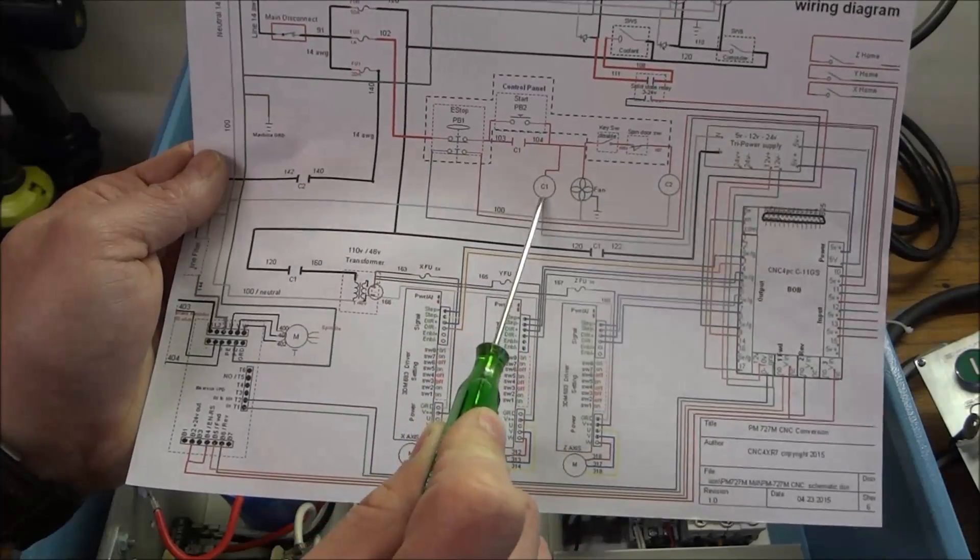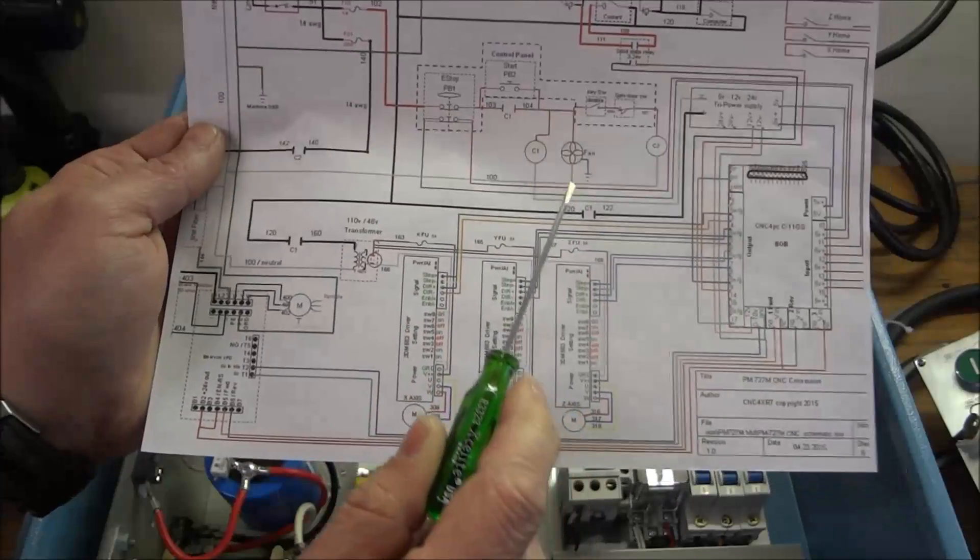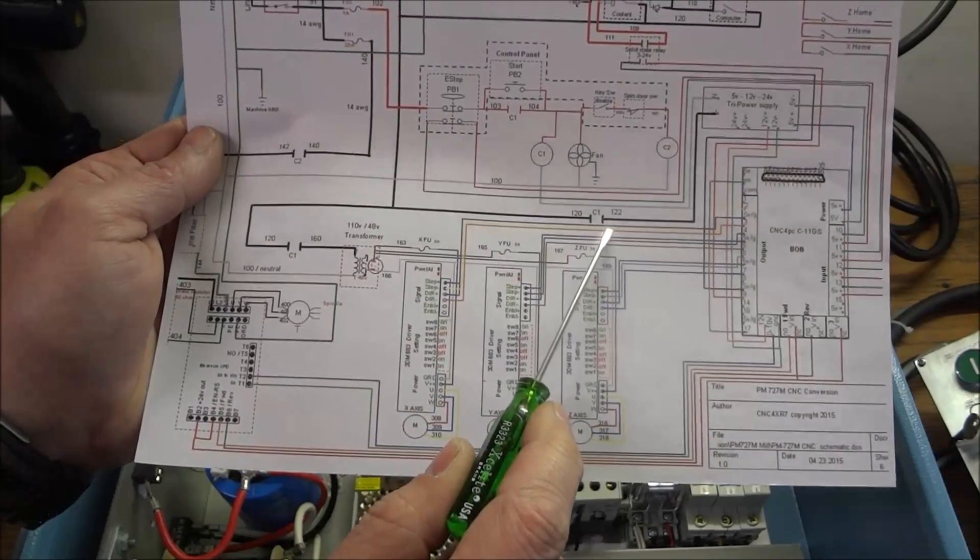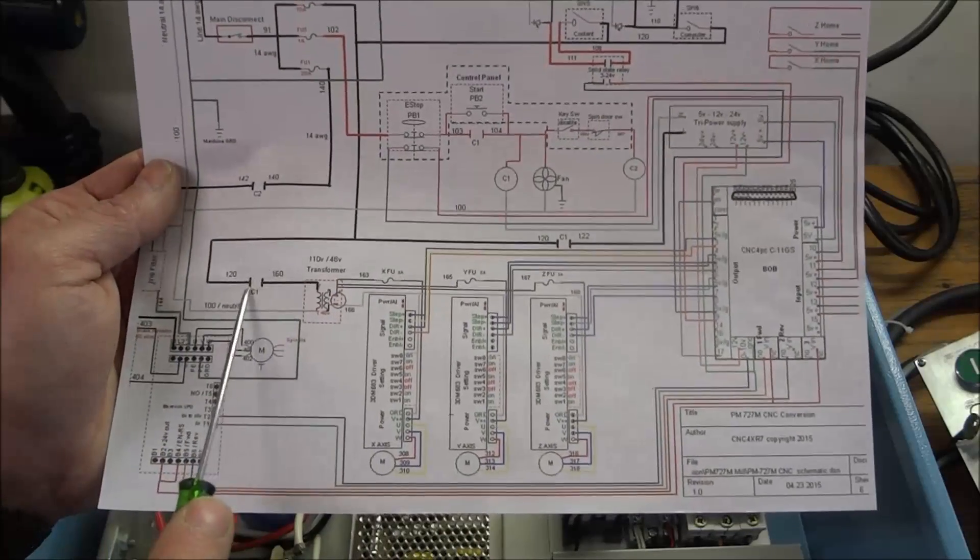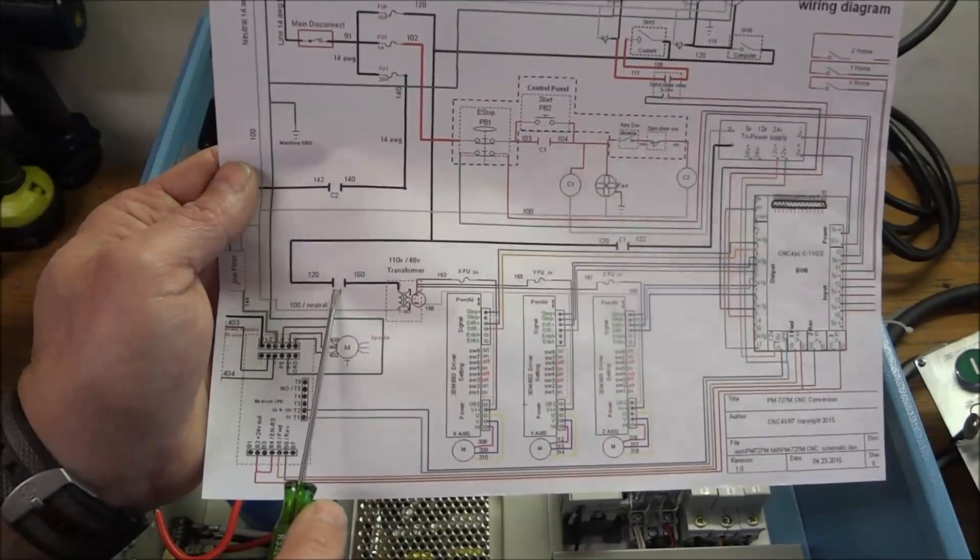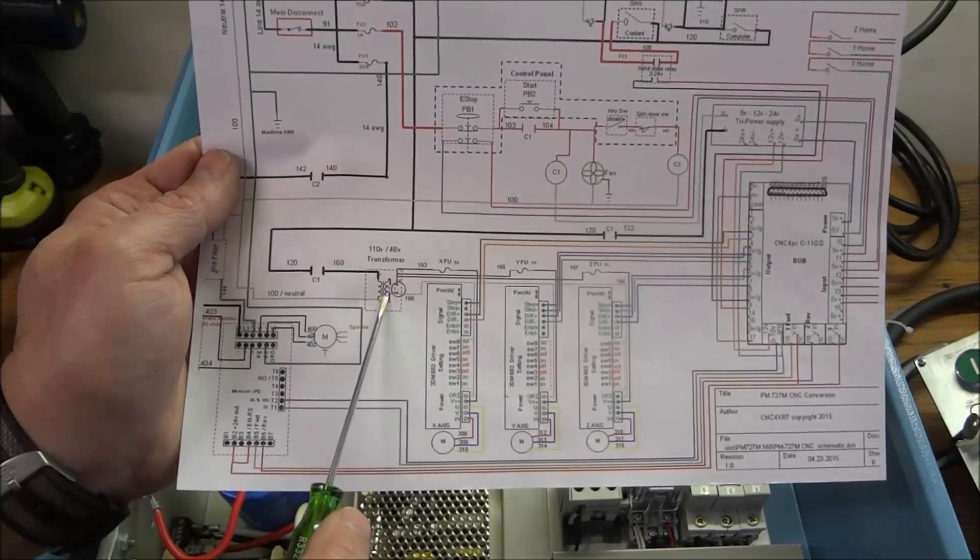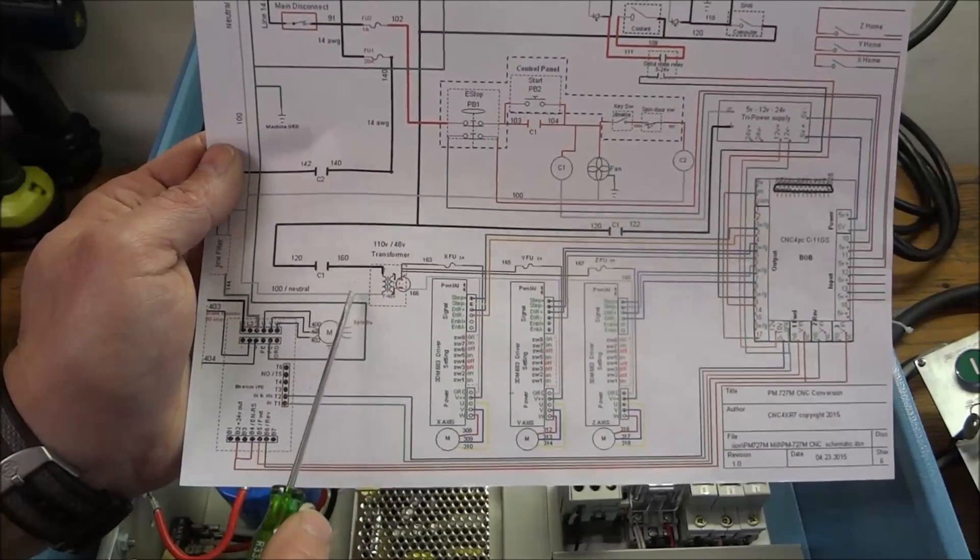power is still applied to the coil and will keep it energized, keeping C1 set of contacts here for our tri-power power supply closed, as well as our set of contacts here for our 48 volt transformer. It will also keep that closed.